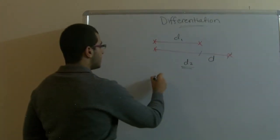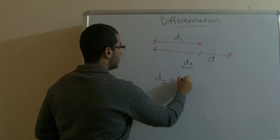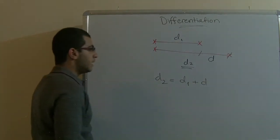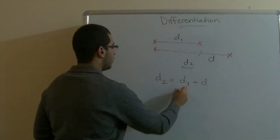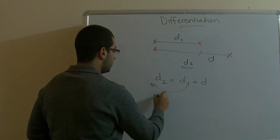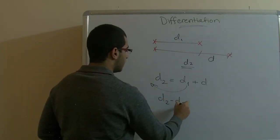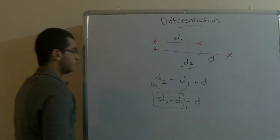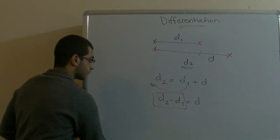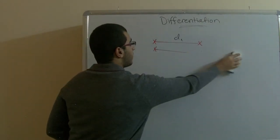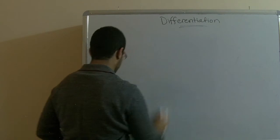we can say that d2 equals d1 plus delta d. And accordingly, we move this to the other side by the negative, so we get d2 negative d1 equals delta d. So our lesson today talks about this variation.